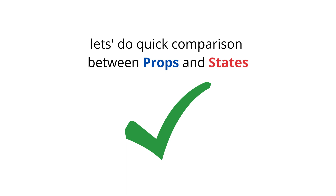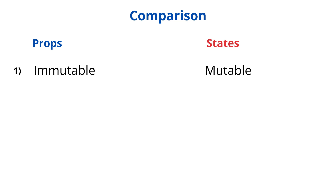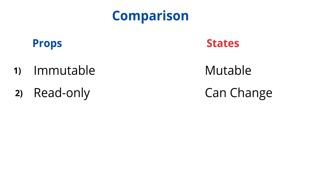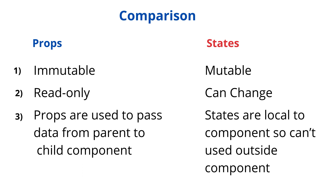There are other important differences between props and state. The responsibility of props is just to pass data from parent to child, so props are immutable — you cannot modify the value of props. States, on the other hand, are dynamic and should change over time based on user interaction, so states are mutable. Props are read-only values, while states can change. Also, states are local to a component, so you cannot access the state outside the component where it is defined. Use props to pass information across components, and use state to handle dynamic behavior based on user interaction.